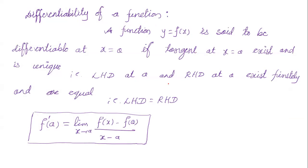The concept here is differentiability of a function. A function y = f(x) is said to be differentiable at x = a if the tangent at x = a exists and is unique, that is, the left-hand derivative equals the right-hand derivative (LHD = RHD). Symbolically, f'(a) = limit as x tends to a of [f(x) - f(a)] / (x - a).